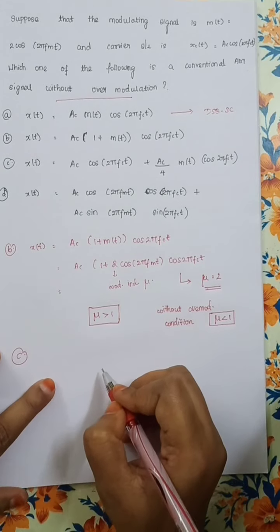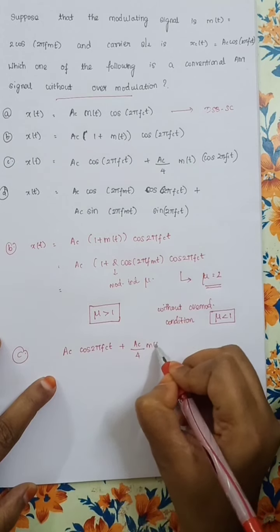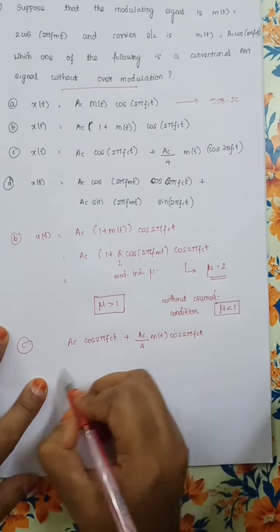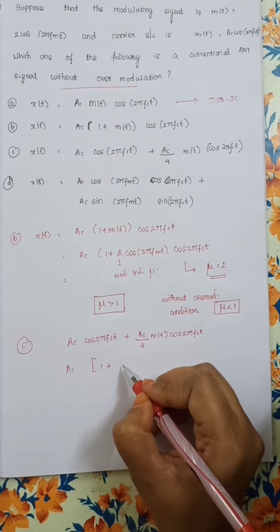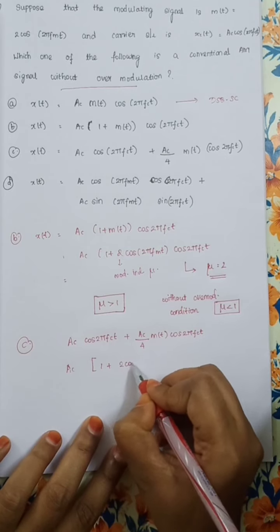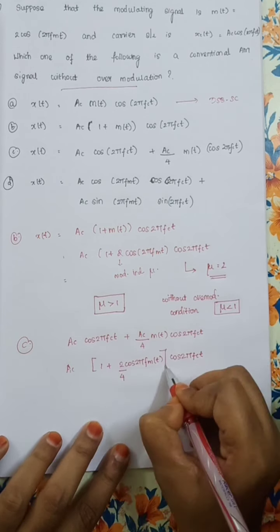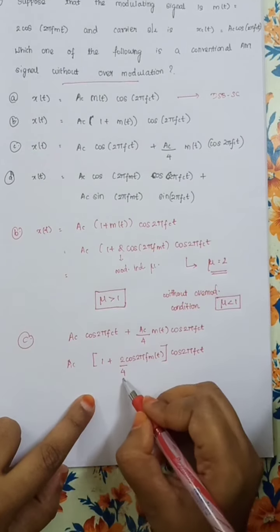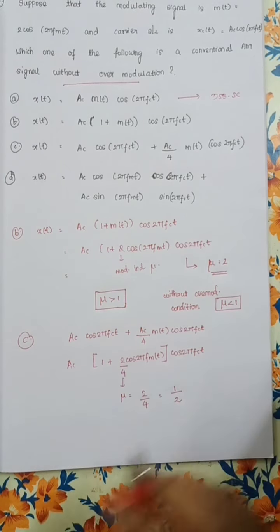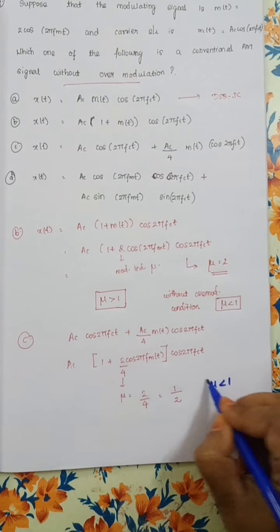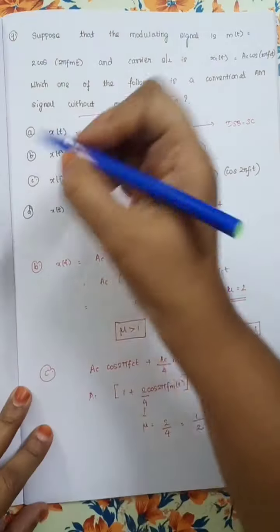Let's move to option C. Option C is a little rearrangement. Substituting m(t) and rearranging, we get the expression in exact AM format: Ac/4·cos(2π·fc·t). Comparing, the modulation index mu = 2/4 = 1/2. Since mu less than 1, this satisfies the no over-modulation condition. So option C is the correct answer.